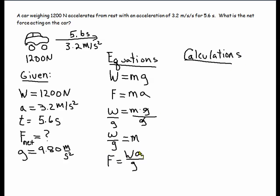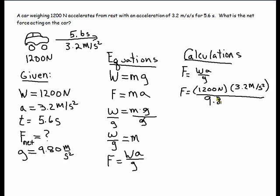We've arrived at our working formula. So, now we substitute in the values. That would be step four. So the weight is 1,200 newtons. And the acceleration is 3.2 meters per second squared. And you divide by the gravity, which is 9.8 meters per second squared.